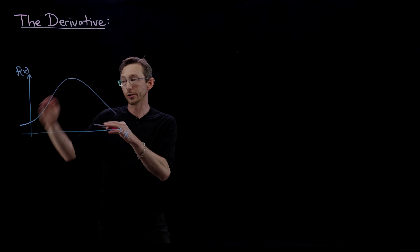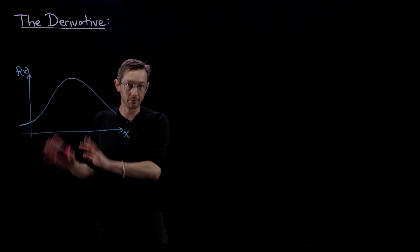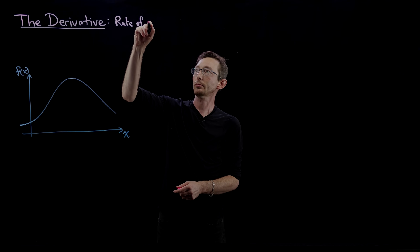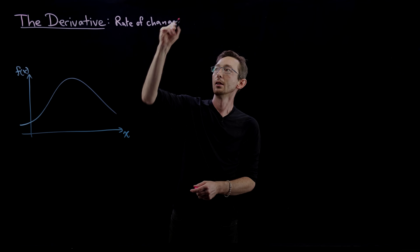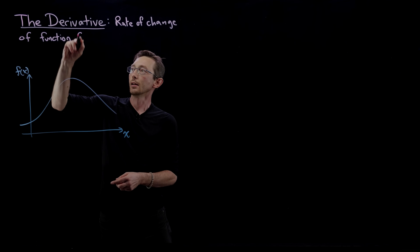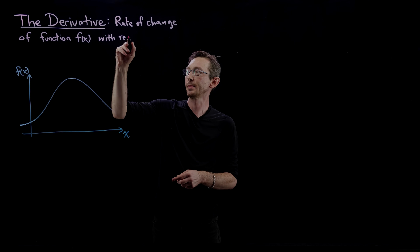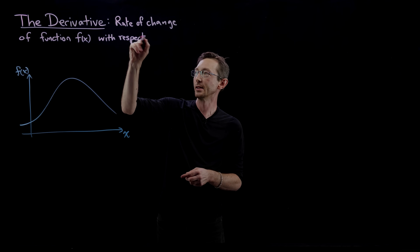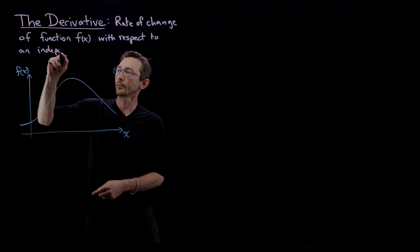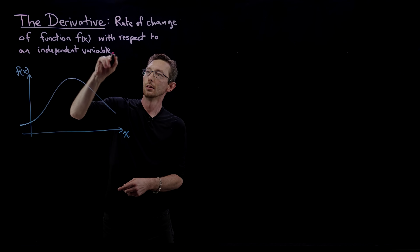I'm going to write this down, then draw a picture, then write out the math — so you'll get words, picture, math. The derivative is the rate of change of a function f of x with respect to an independent variable x.